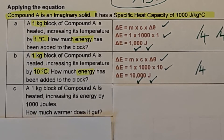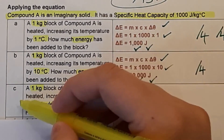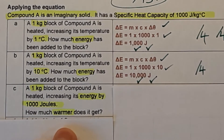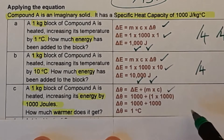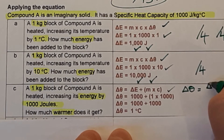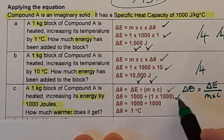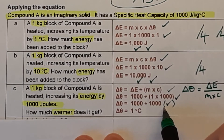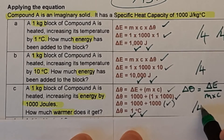Question C: a 1 kg block of compound A is heated, increasing its energy by 1,000 J. How much warmer does it get? We need a different form: Δθ = ΔE/(m × c). Filling in: 1,000/(1 × 1,000) = 1,000/1,000 = 1. Answer: 1 degree Celsius. Mark out of four.